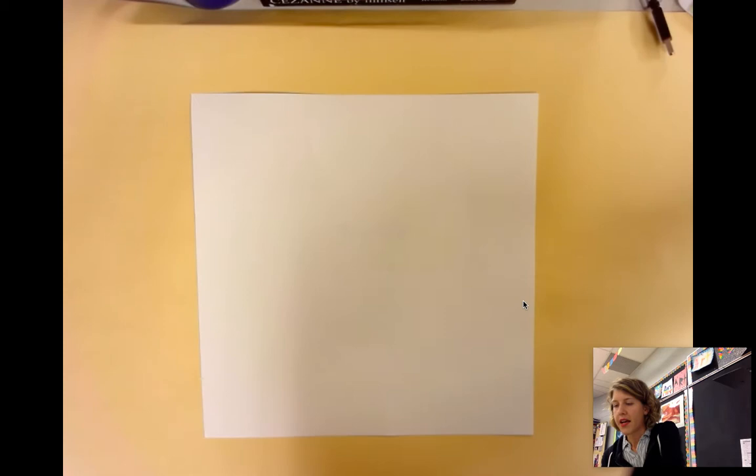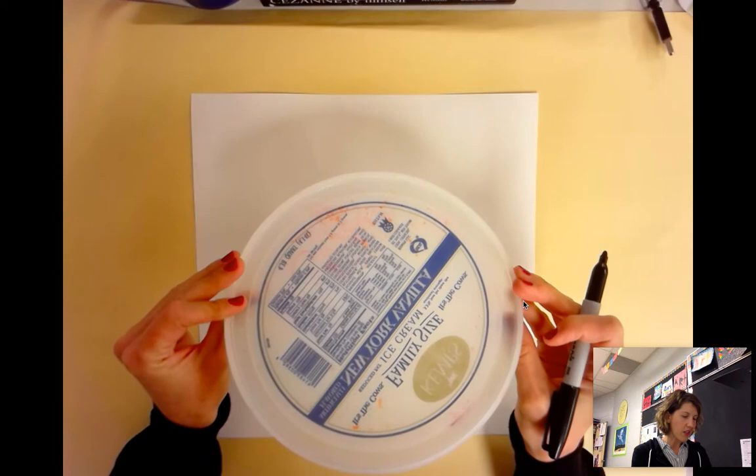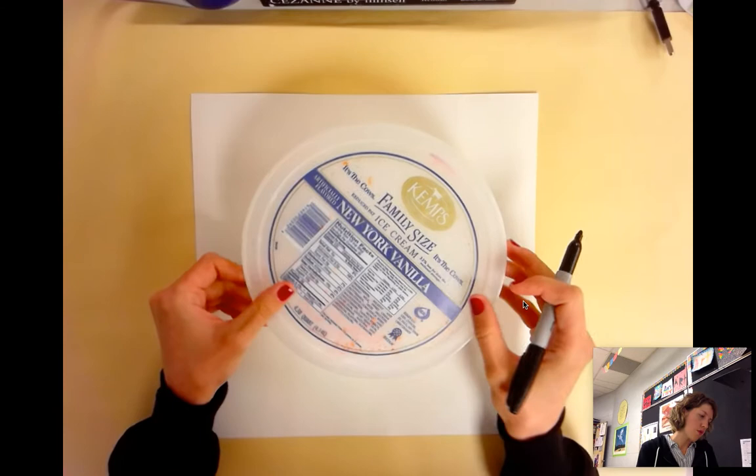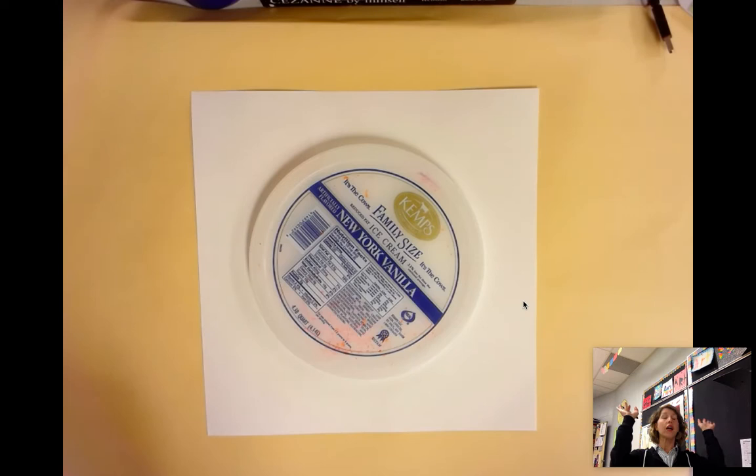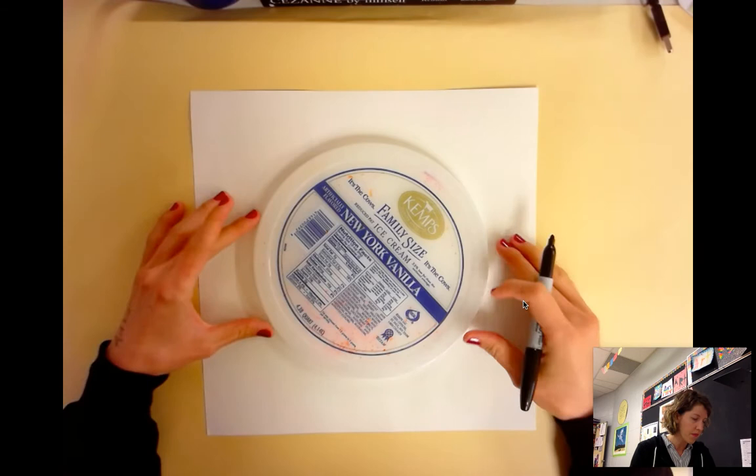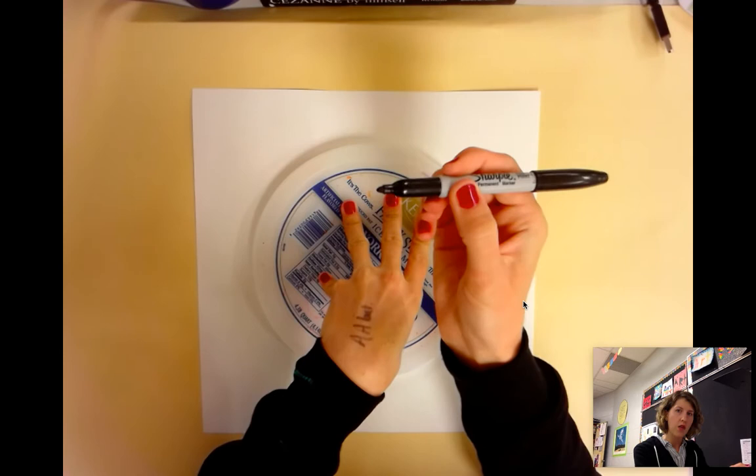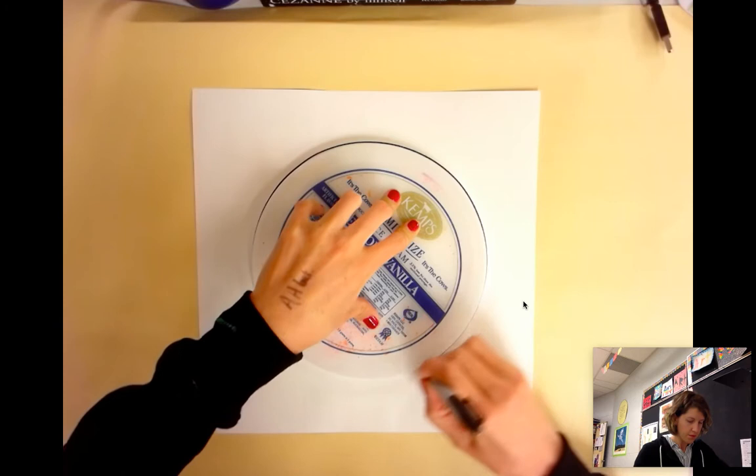And I'm going to start with an ice cream lid to trace my circle first. If you have a plate at home or if you have just something that's circle shaped that you can trace, that helps, but you don't really need it. You can draw a circle yourself just fine. And if it's not perfect, that's okay. We don't care. It's still going to look cool. Even if it's like lopsided, trust me, it'll still look cool. So let's start with our ice cream lid right in the middle. Hold it down with one hand. And with your other hand and your sharpie, we're going to trace around that circle.